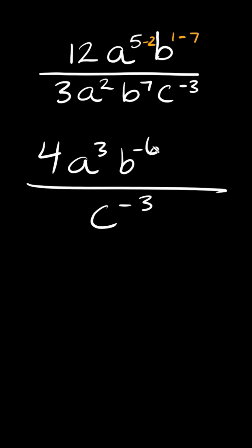Okay now the last thing we do is check for negative exponents and you flip them to the other side of the fraction and turn them positive. So our final answer here would be 4a cubed, b to the negative 6 becomes b to the positive 6 down here, and then c to the positive 3 on top.